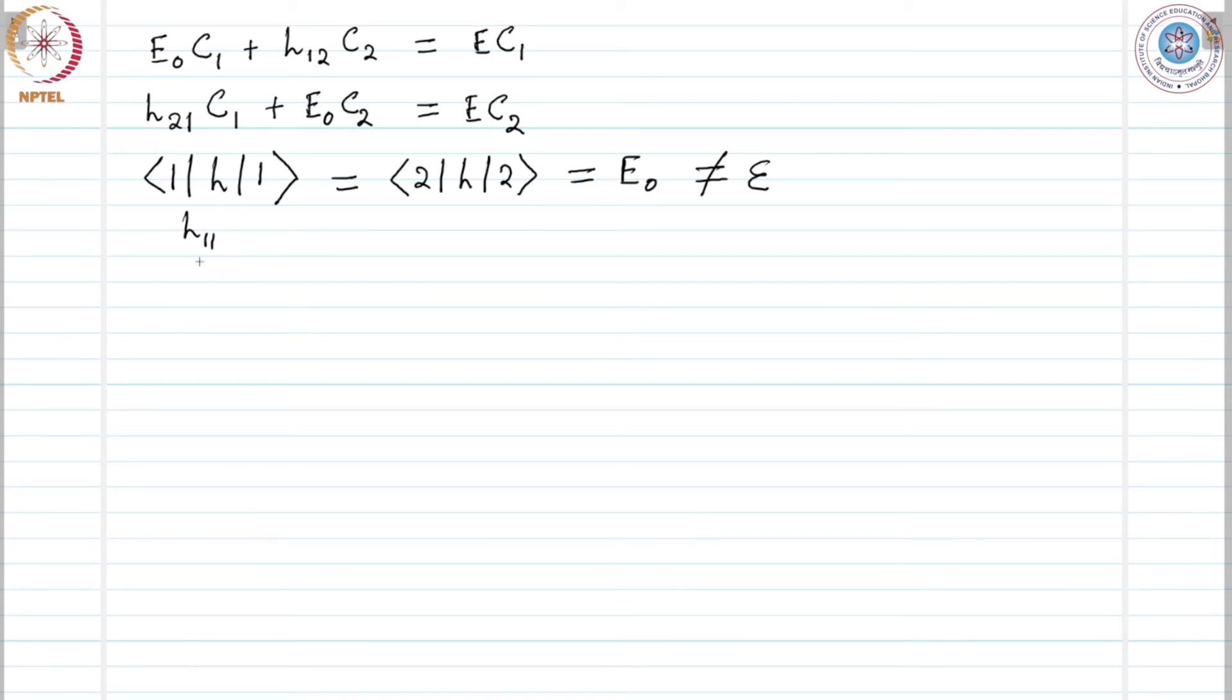Our H11 and H22, these quantities are called the on-site matrix element. This operation is on one site, one hydrogen atom. H12 and H21 are hopping matrix elements. Why these are called hopping matrix elements, we will understand that later.